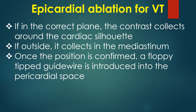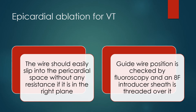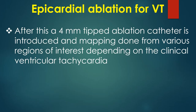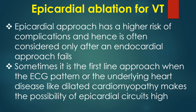Once the position is confirmed, a floppy-tipped guidewire is introduced into the pericardial space. The wire should easily slip in without any resistance if in the right plane. The guidewire position is checked by fluoroscopy, and an ATF introducer sheath is threaded over it. After this, a 4 mm tipped ablation catheter is introduced and mapping is done from various regions of interest depending on the clinical ventricular tachycardia. The epicardial approach carries a higher risk of complications and is often considered only after an endocardial approach fails.